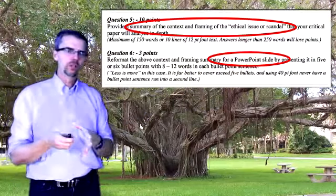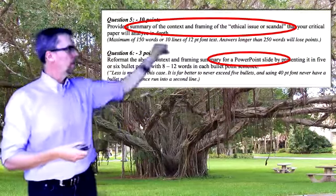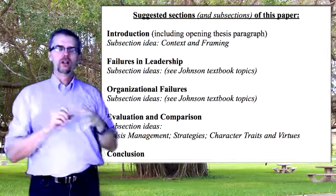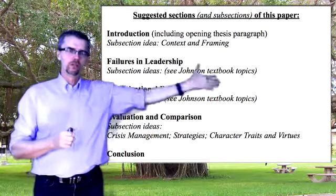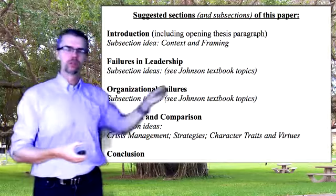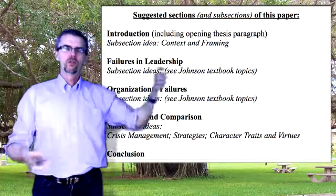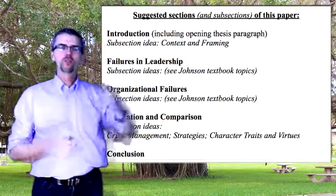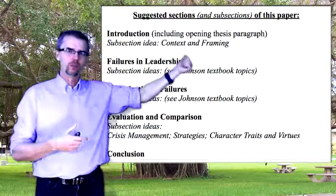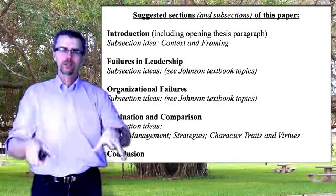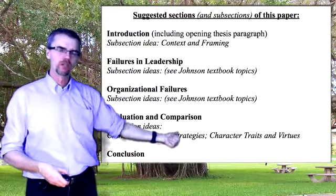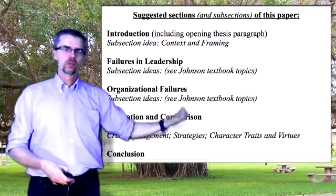Do you see what quiz number two is doing? It's saying this subsection needs to deal with context and framing — in 150 words, tell the audience what your context and framing is; in your PowerPoint presentation, your five bullet points will tell your audience this. At this point, for quiz number two, you don't need to commit to paper anything more than 150 words and five bullet points. You can write it up later — quiz number two is walking you through how to create each section of your critical analysis paper.